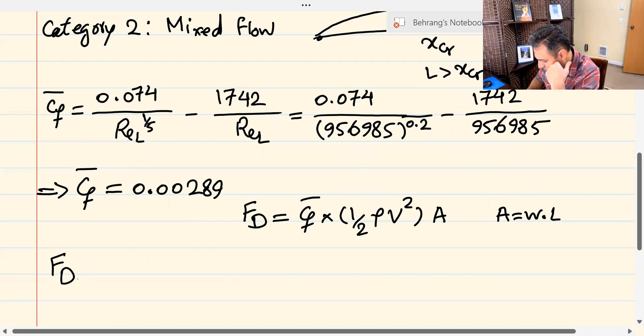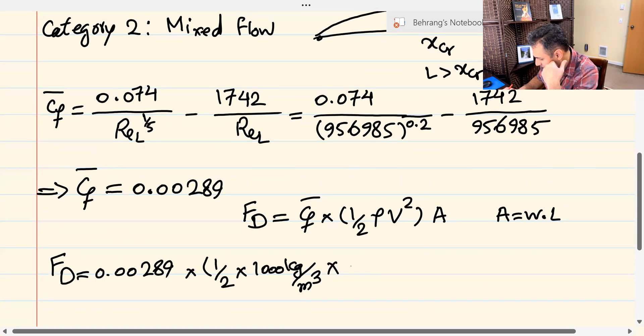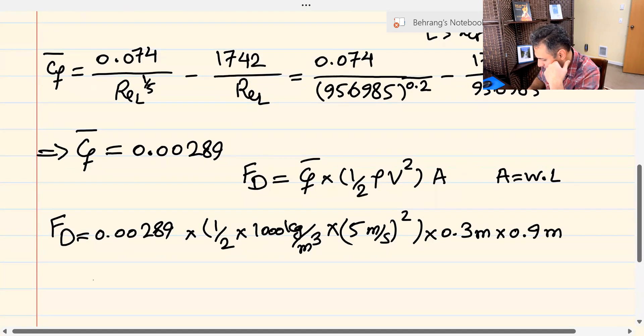So, drag force would be 0.00289 times 1 over 2 times density, 1,000 kilograms per meters cubed times velocity, 5 meters per second squared times the area. Area would be 0.3 meters times 0.9 meters. I already calculated the value of drag force in this case, and it is 9.754 Newton.